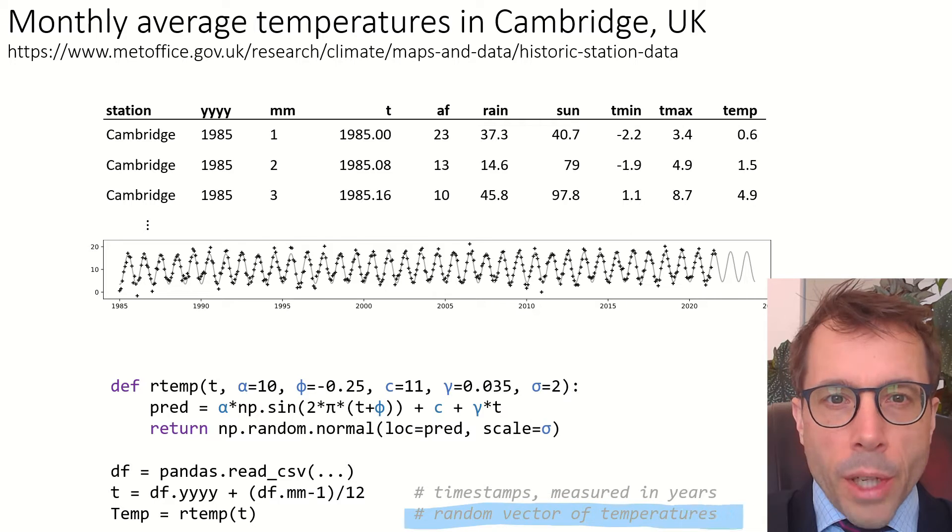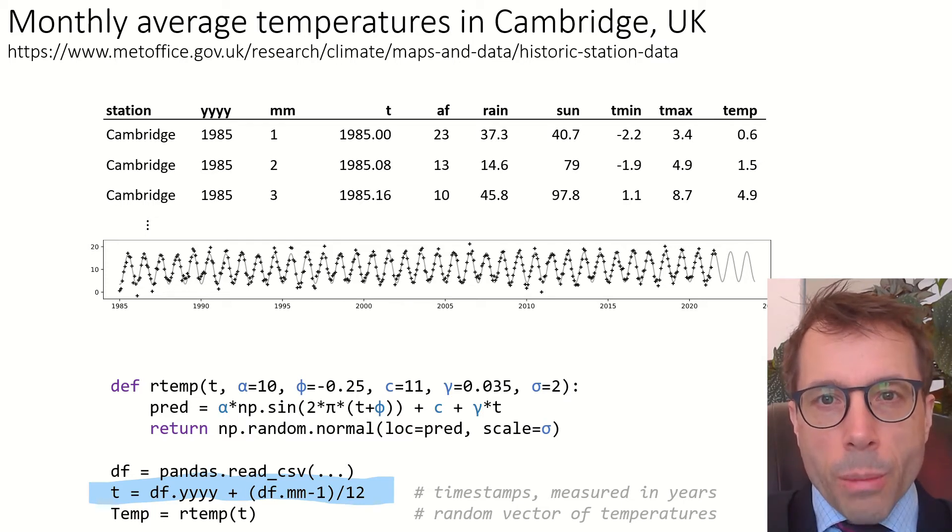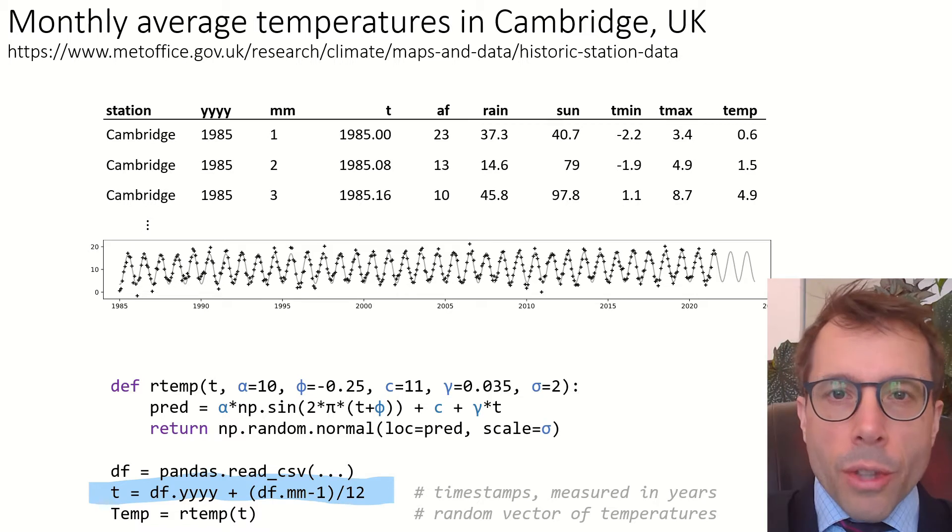One more quick comment. The bottom line says random vector of temperatures. Can you spot why I get out a vector and not just a single temperature? It's numpy vectorized code. That's why. T here refers to an entire column from the data frame, a vector. And the standard numpy operations, if you give them a vector as input, they'll return a vector as output. I'll be using lots of vectorized code in all my code snippets throughout this course.